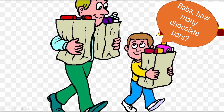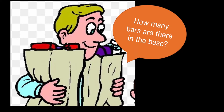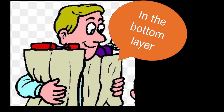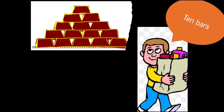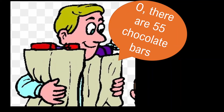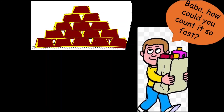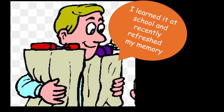Ganesh asked, 'Baba, how many chocolate bars?' Dad asked, 'How many chocolate bars are there in the base — in the bottom layer?' Ganesh replied that there are 10 bars in the base. The dad immediately replied, 'There are 55 chocolate bars.' Ganesh was amazed by the dad's answer: 'Baba, how could you count it so fast?' The dad replied, 'I just learned it in school and recently refreshed my memory.'